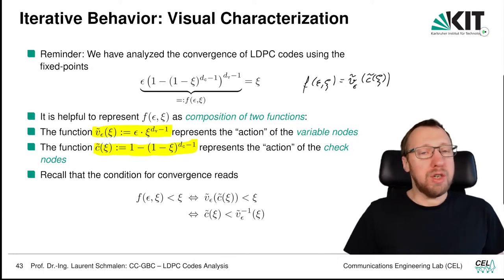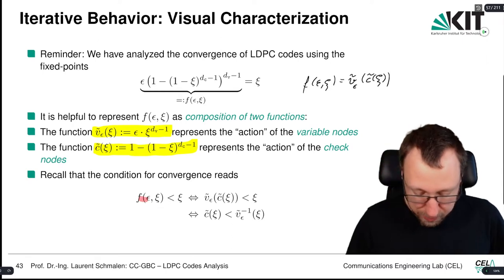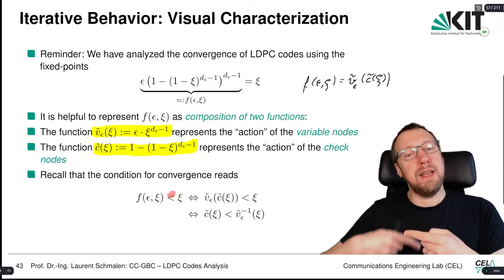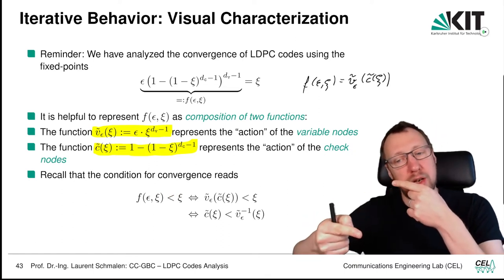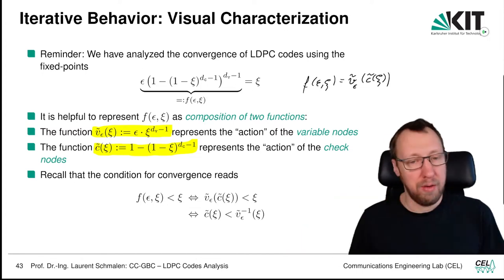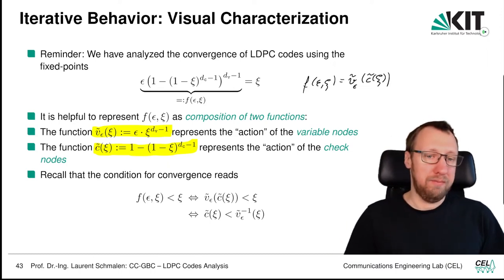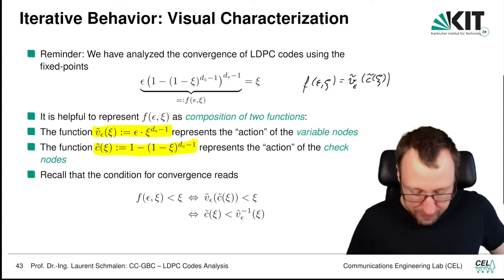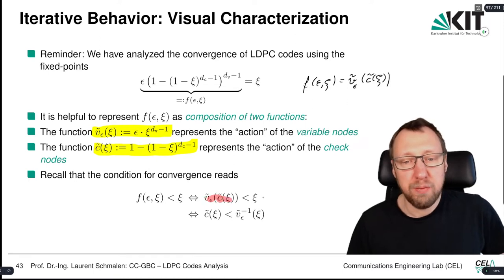We have convergence if there is no fixed point, meaning f(ε, ξ) is always smaller than ξ for every ξ between 0 and 1. This means in each iteration we will converge downward and decrease the error probability. We can write this as Ṽ_ε(C̃(ξ)) < ξ.